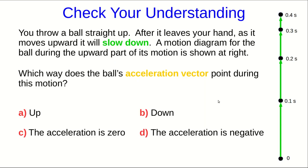Let's check your understanding. If you throw a ball straight up, you may note that as it moves upwards it will slow down. You can certainly verify that in the lab. A motion diagram for the ball during the upward part of its motion is shown at right. Which way does the ball's acceleration vector point during this motion? If you're doing this through Moodle, Moodle will now ask you this question. Otherwise, I think you should still answer the question for yourself before you go on to the next part of the lecture.